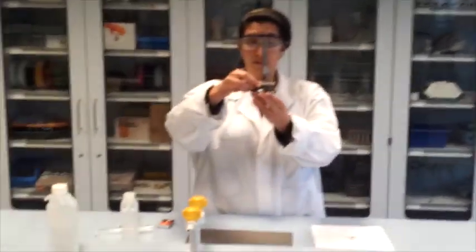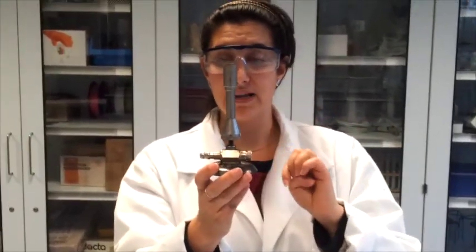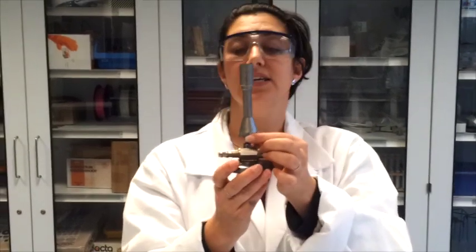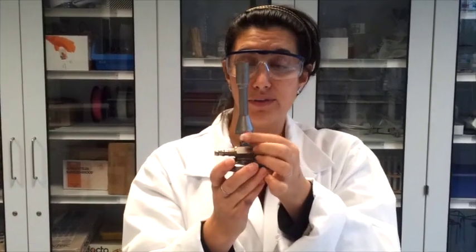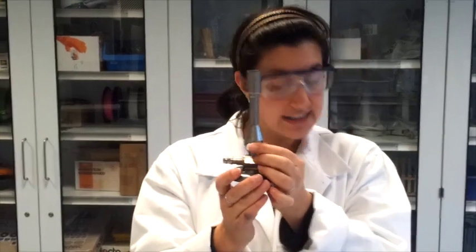Then we take the Bunsen burner. This is the barrel or the chimney of the Bunsen burner. This is the air hole that we can open using this regulator or thumb wheel.